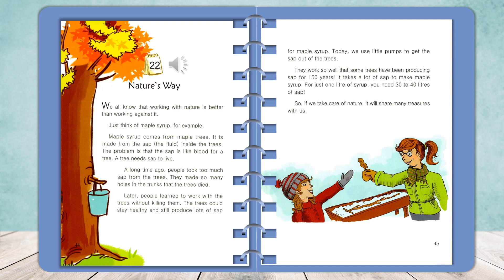Today, we use little pumps to get the sap out of the trees. They work so well that some trees have been producing sap for 150 years. It takes a lot of sap to make maple syrup. For just one liter of syrup, you need 30 to 40 liters of sap.